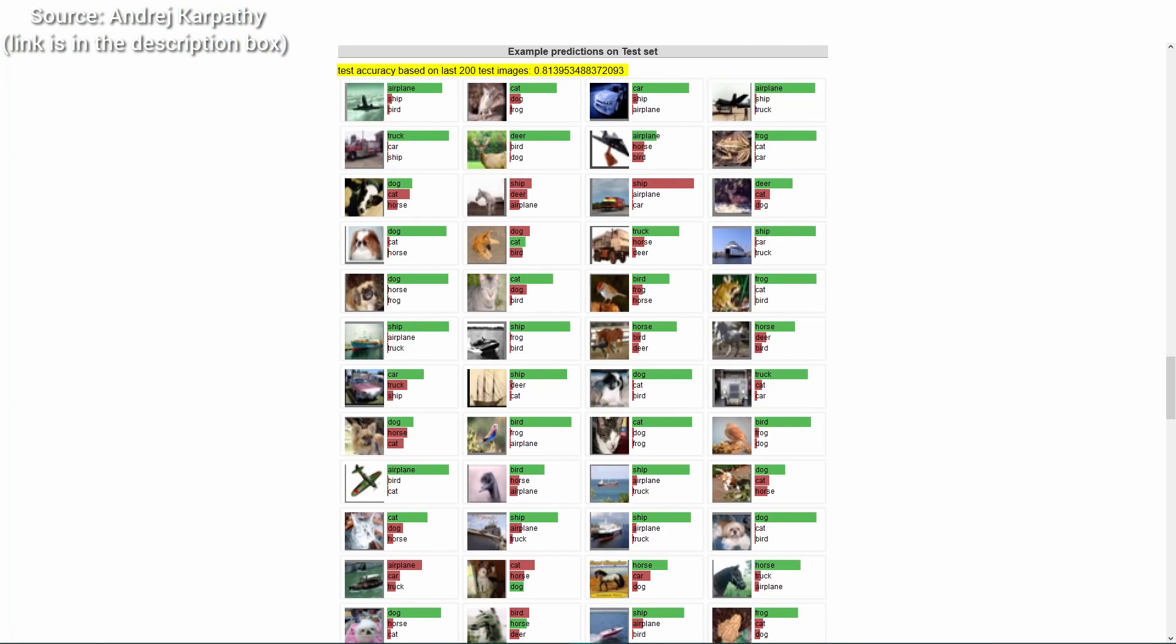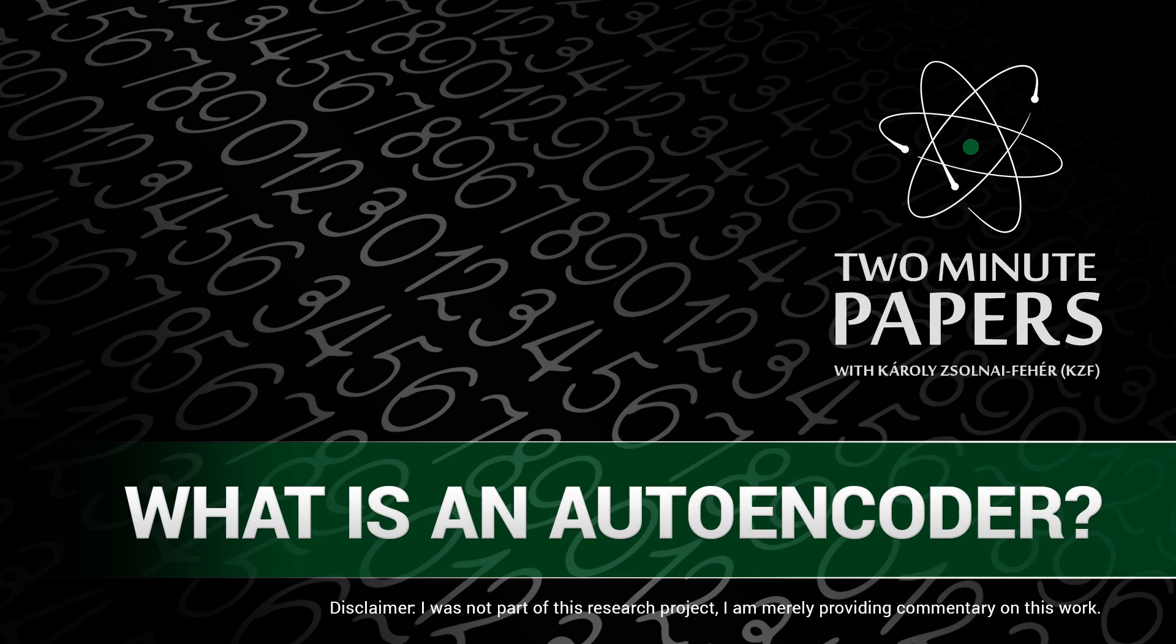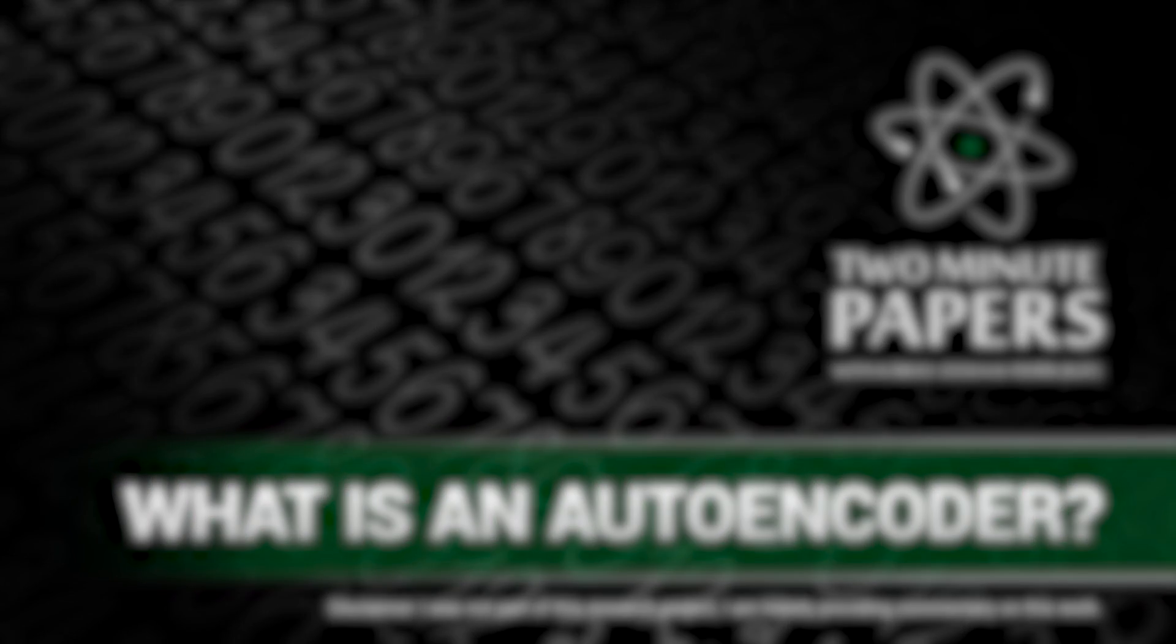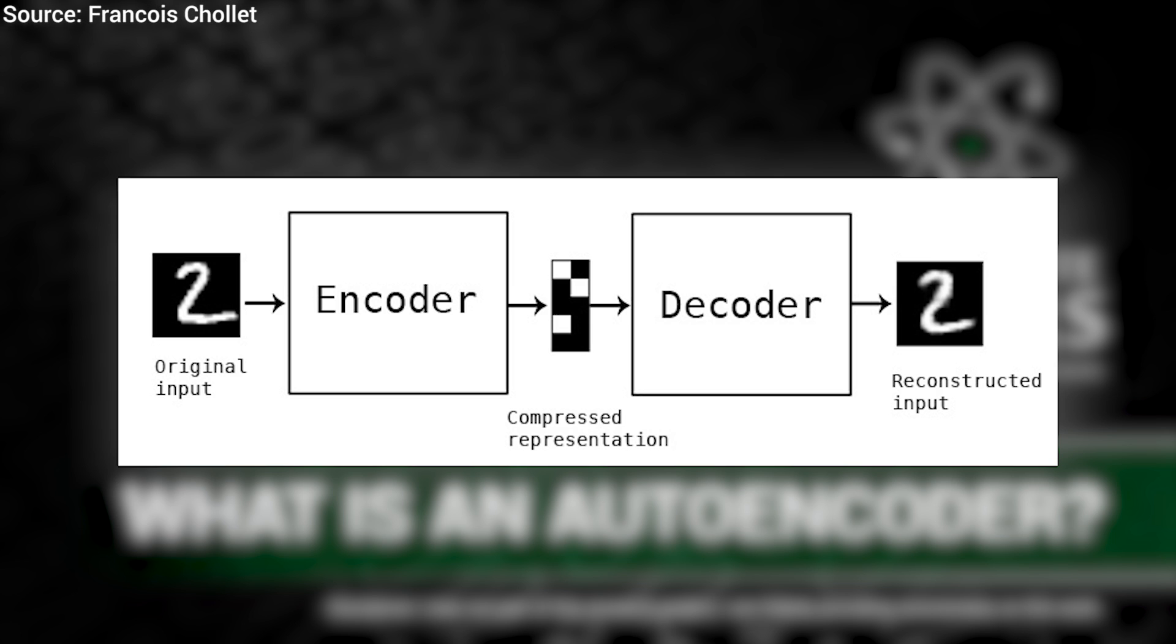So what is an autoencoder? An autoencoder is an interesting variant with two important changes. First, the number of neurons is the same in the input and the output. Therefore, we can expect that the output is an image that is not only the same size as the input, but actually is the same image.